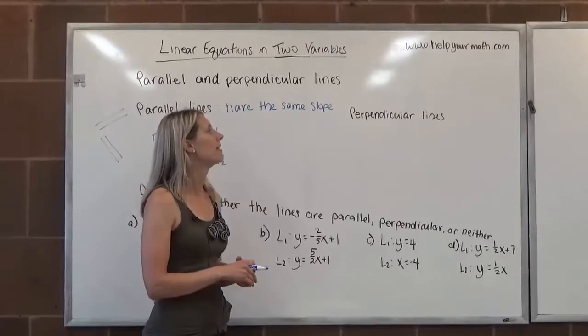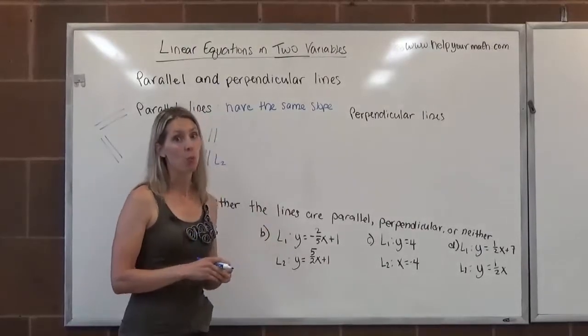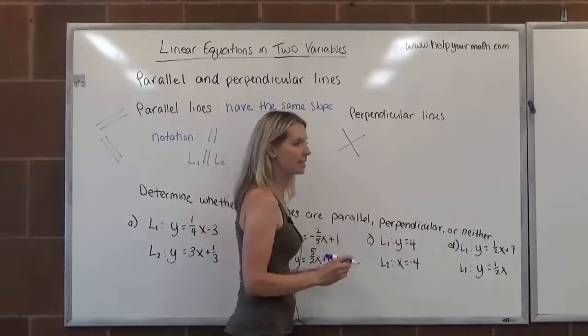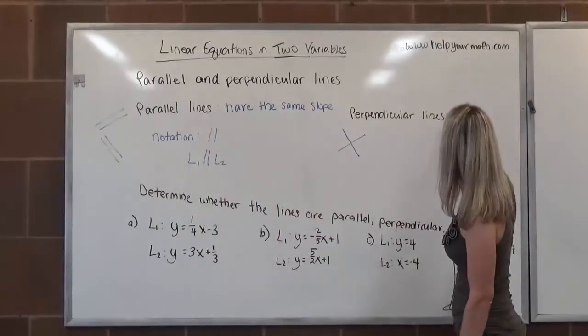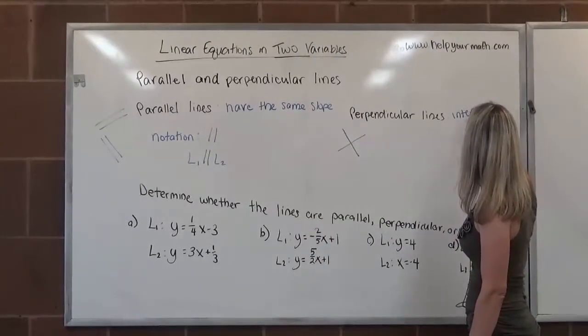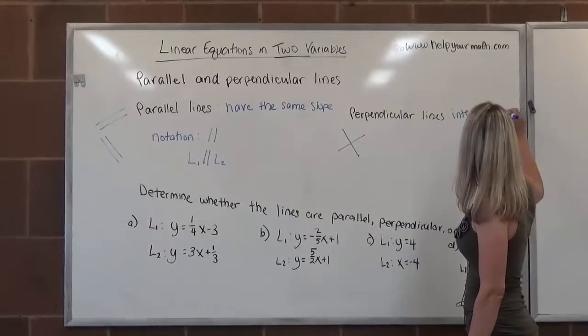Perpendicular lines meet at four right angles. So when we have perpendicular lines, they intersect and form four right angles. Perpendicular lines intersect and create four right angles.